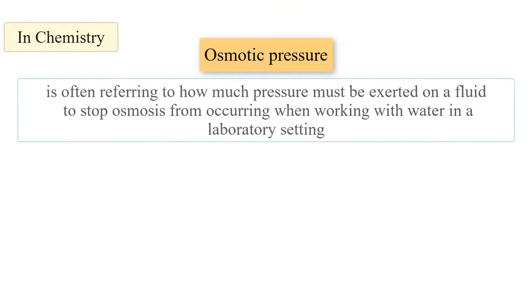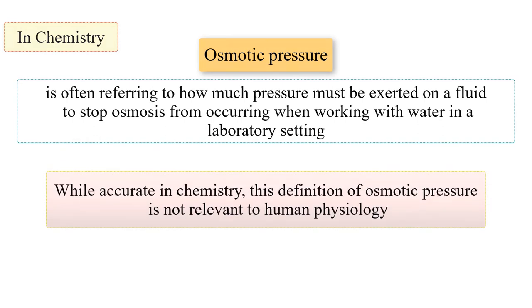It is also necessary to point out that in chemistry, osmotic pressure often refers to how much pressure must be exerted on a fluid to stop osmosis from occurring when working with water in a laboratory setting. This does not happen in cells, and while accurate in chemistry, this definition of osmotic pressure is not relevant to human physiology.